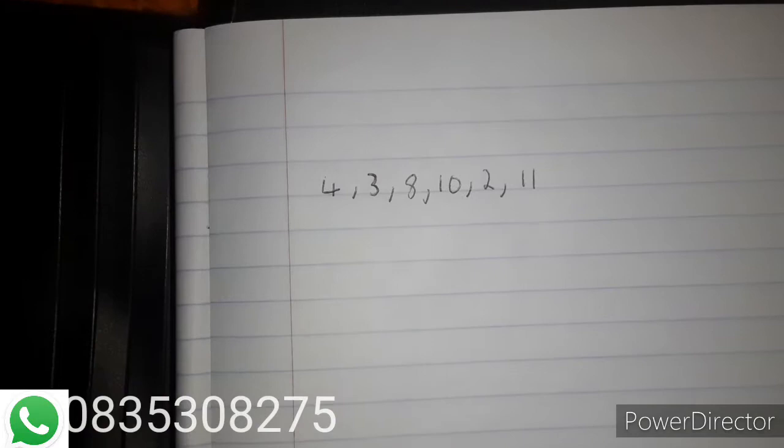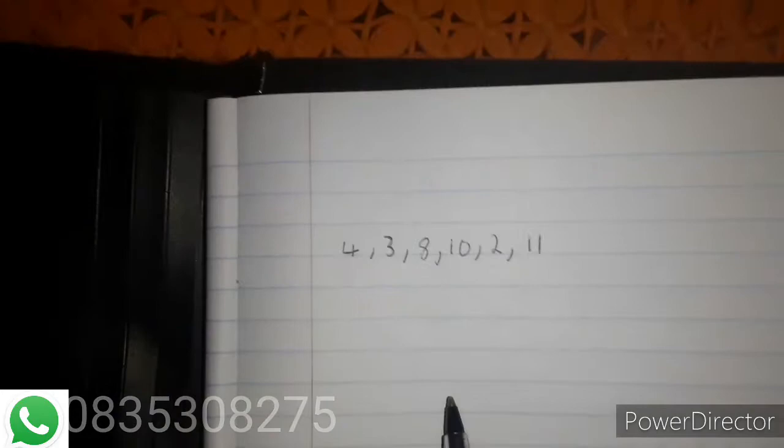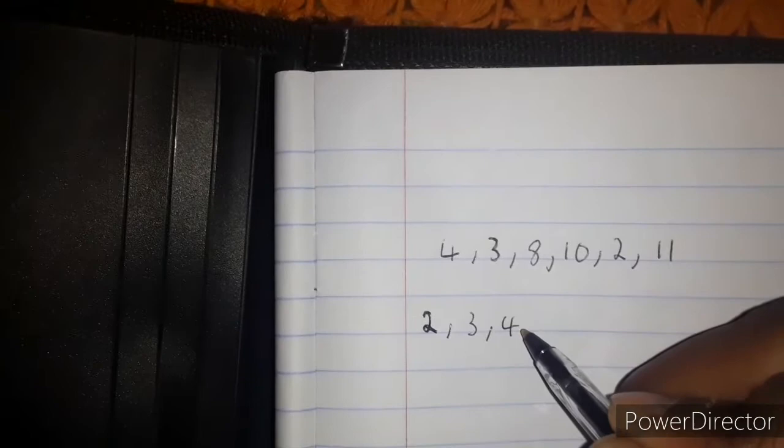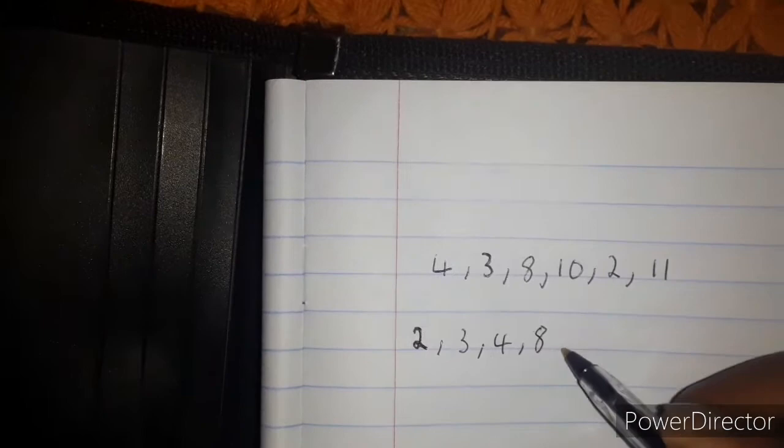The first step is to arrange the data in ascending order. Start with the lowest value which is 2, then followed by 3, 4, 8, 10, and 11.